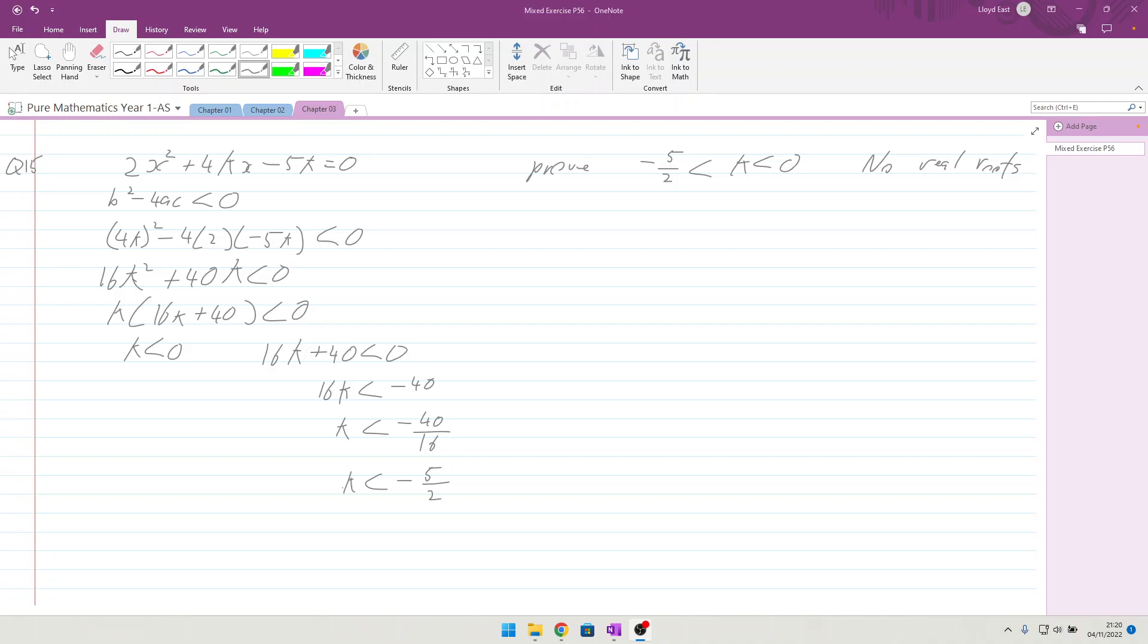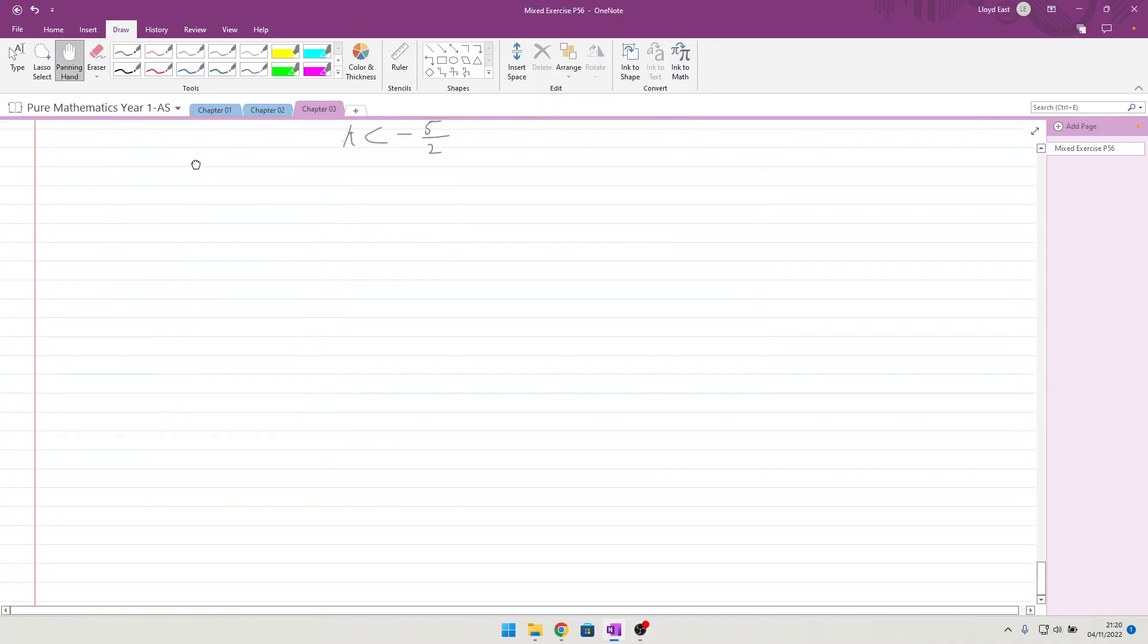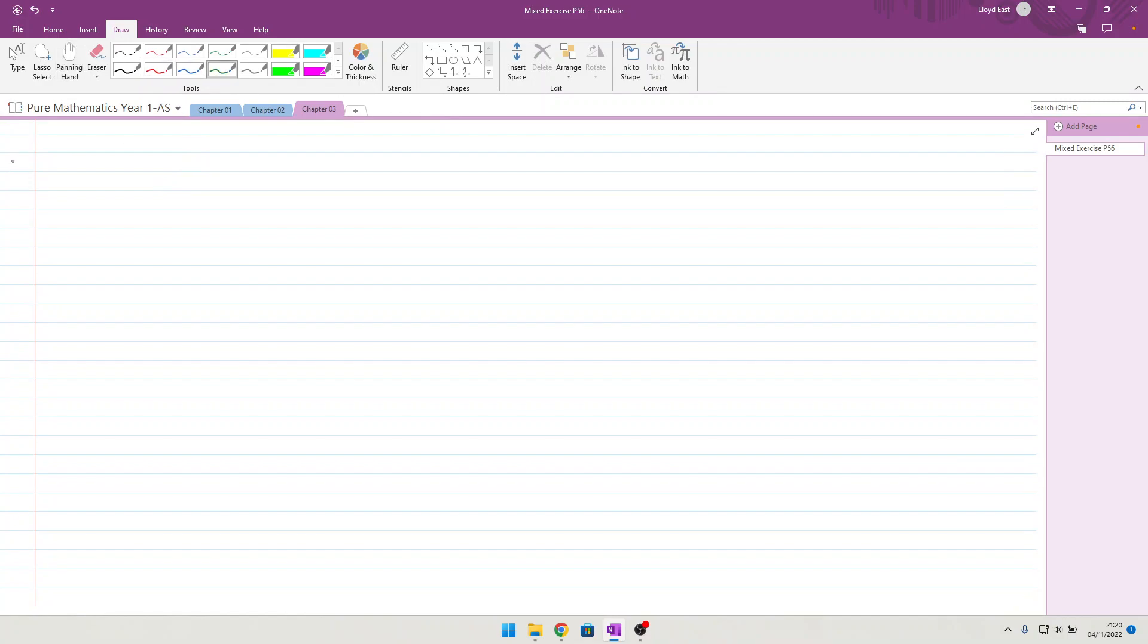Moving swiftly along to question 16 then. Question 16: sketch the graph of y equals f of x which is x squared plus 2x minus 15, and g of x is equal to 6 minus 2x. Sketch on the same axis.